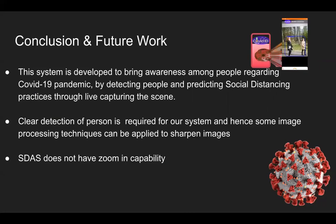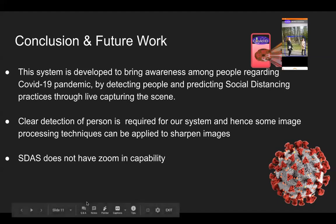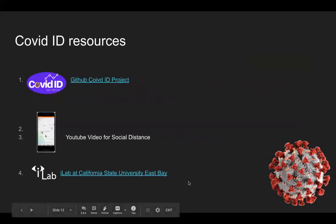The system is developed to bring awareness among people regarding the COVID-19 pandemic by detecting people and predicting distances through live capturing. There are still future pending works that can be done to increase the accuracy of our system. These include clearer detection of persons using image processing techniques to sharpen images, and adding a zoom-in capability, which could also help increase accuracy. To find more information about the application, you can visit our GitHub repositories. Thank you!